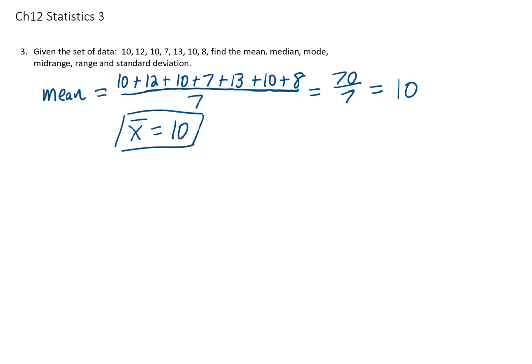Next, if we want to find the median, what we need to do first is order the data. Now we can cross off values from either side of this set so that we can work our way to finding our middle value. That value is 10, so our median is 10.